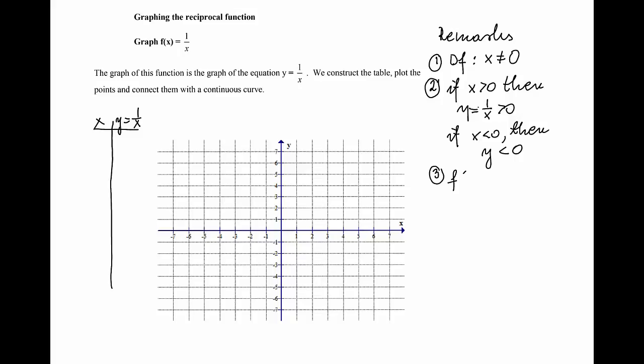Also, we can quickly show that the function is odd. f(-x) = 1/(-x) = -1/x, which is -f(x). Therefore, f is odd. What does that mean for the graph? It means the graph is symmetric with respect to origin. This also means that to graph this function, it is enough to graph the part for x greater than zero and then use symmetry with respect to origin to graph the part for x less than zero.